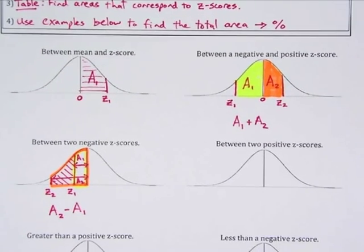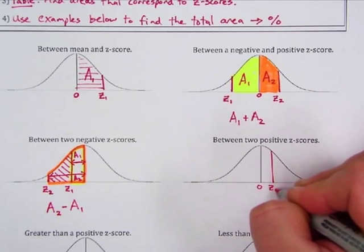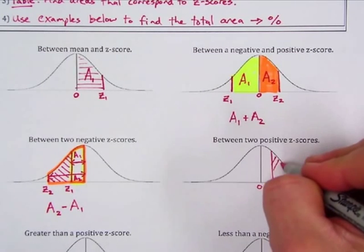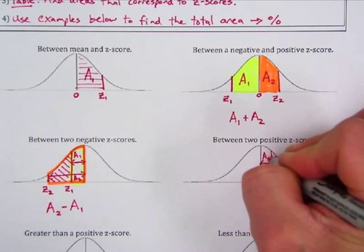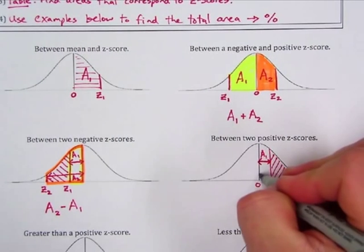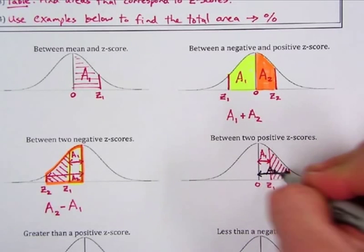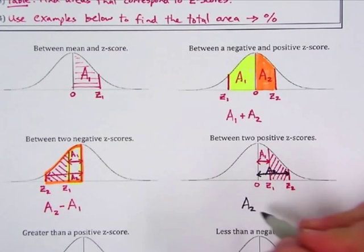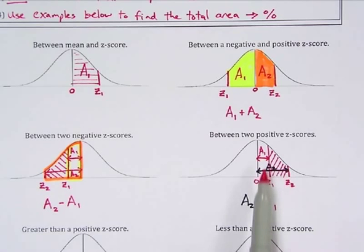Between two positive z-scores gives us a similar situation. Both z-scores are on the same side of the mean. z₁ gives area A₁ from the mean to z₁, and z₂ gives area A₂ from the mean to z₂. Since the areas overlap, to get just the shaded area between the two z-scores, we take A₂ − A₁.